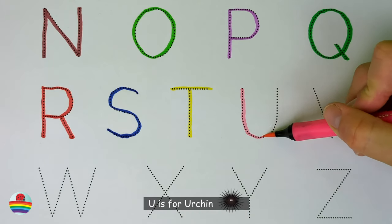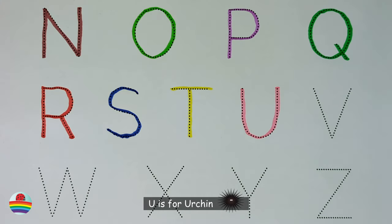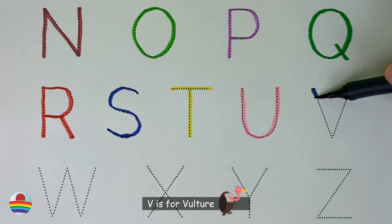U. U is for urchin. V. V is for vulture.